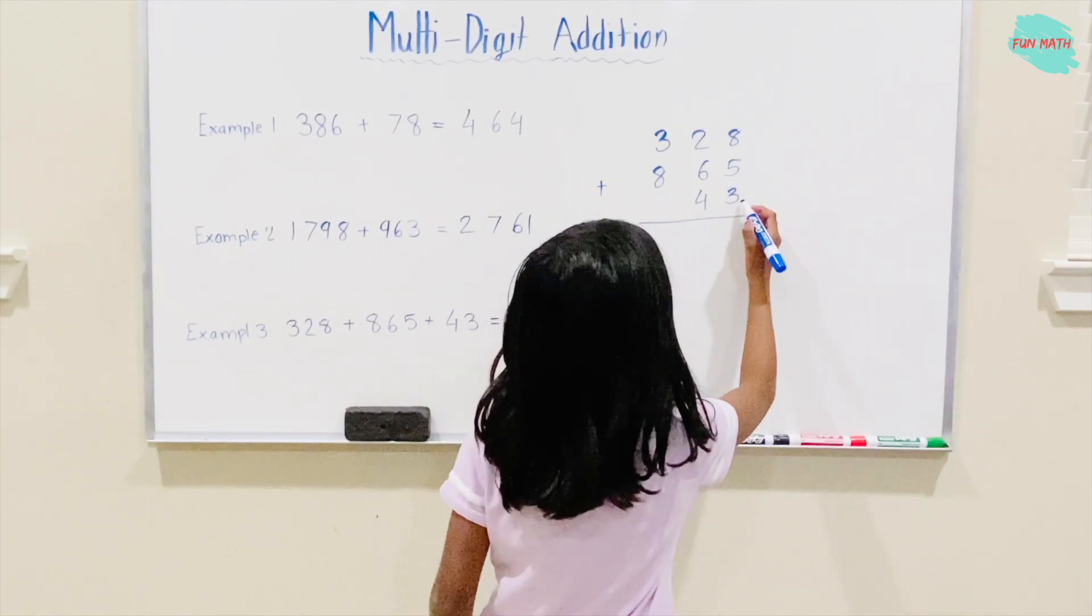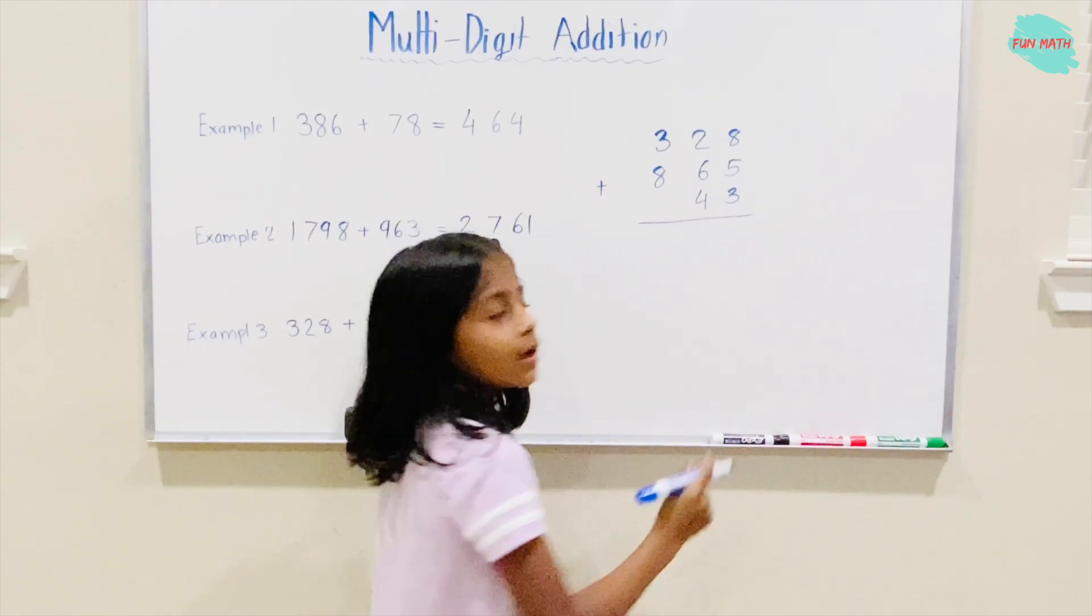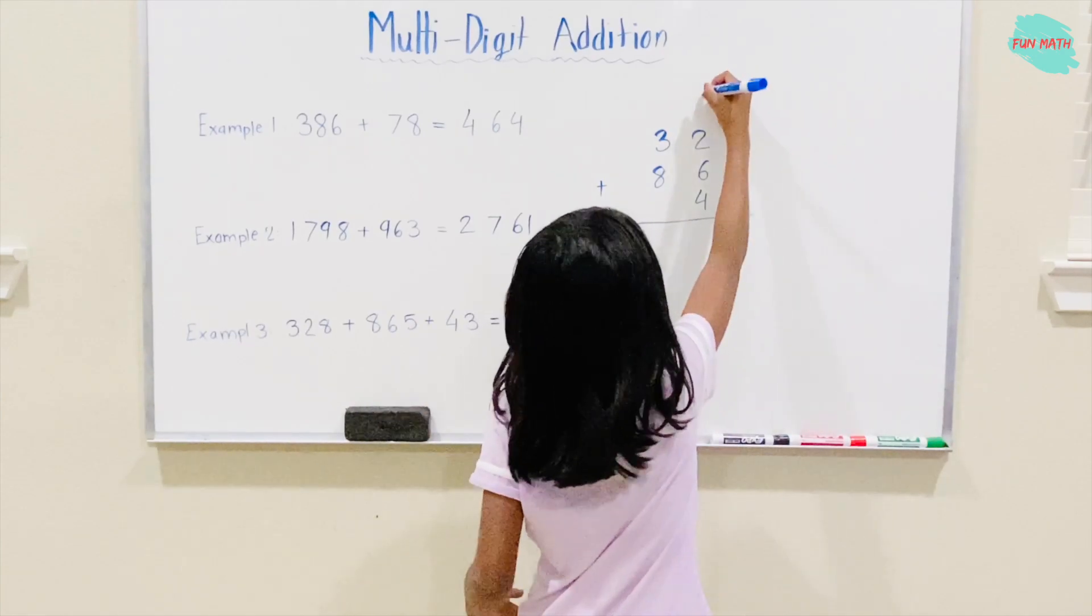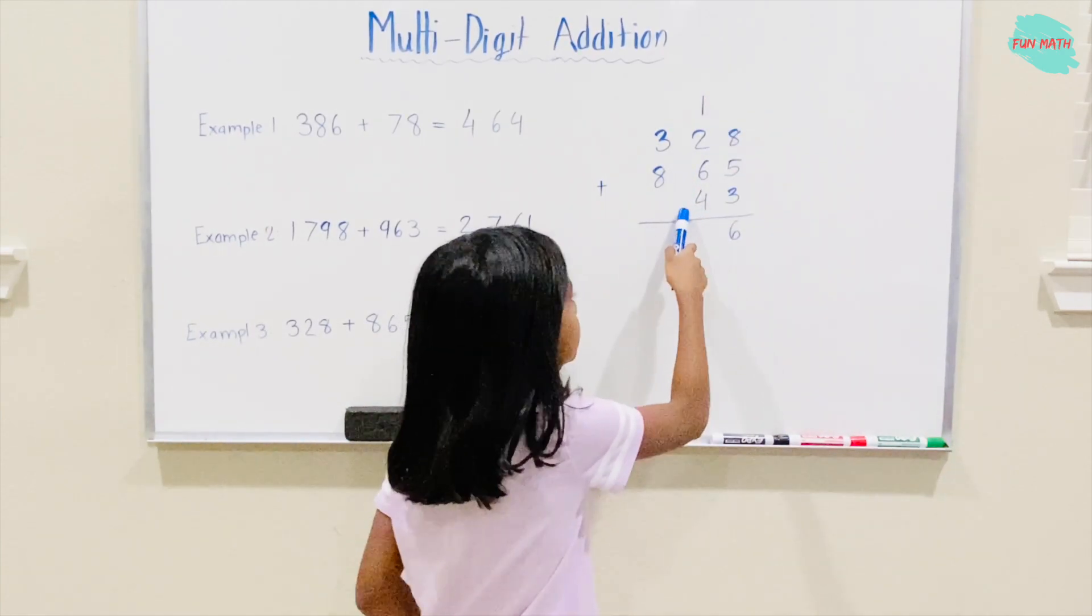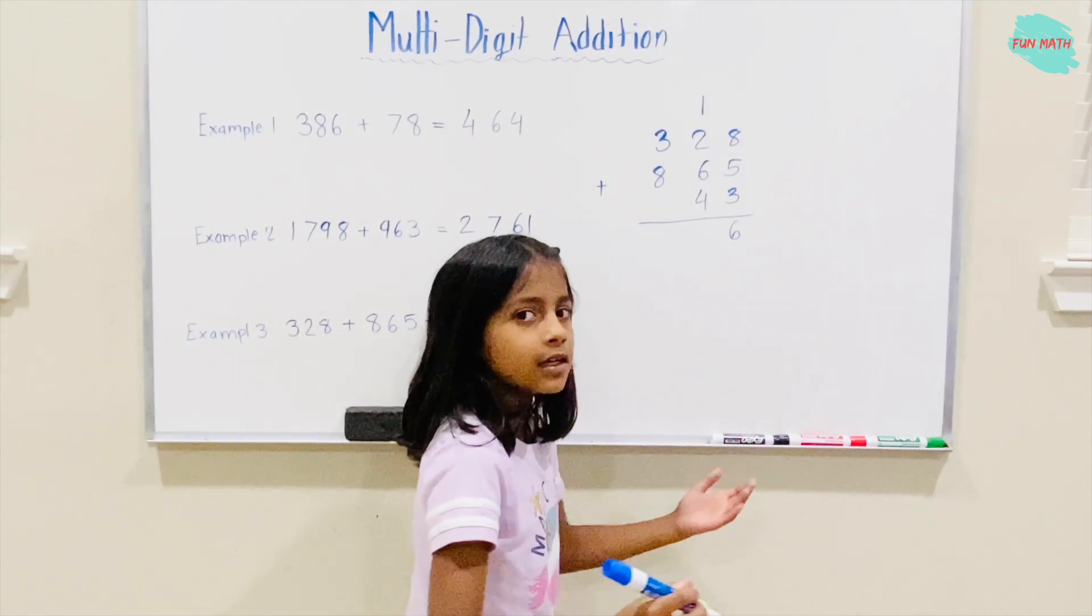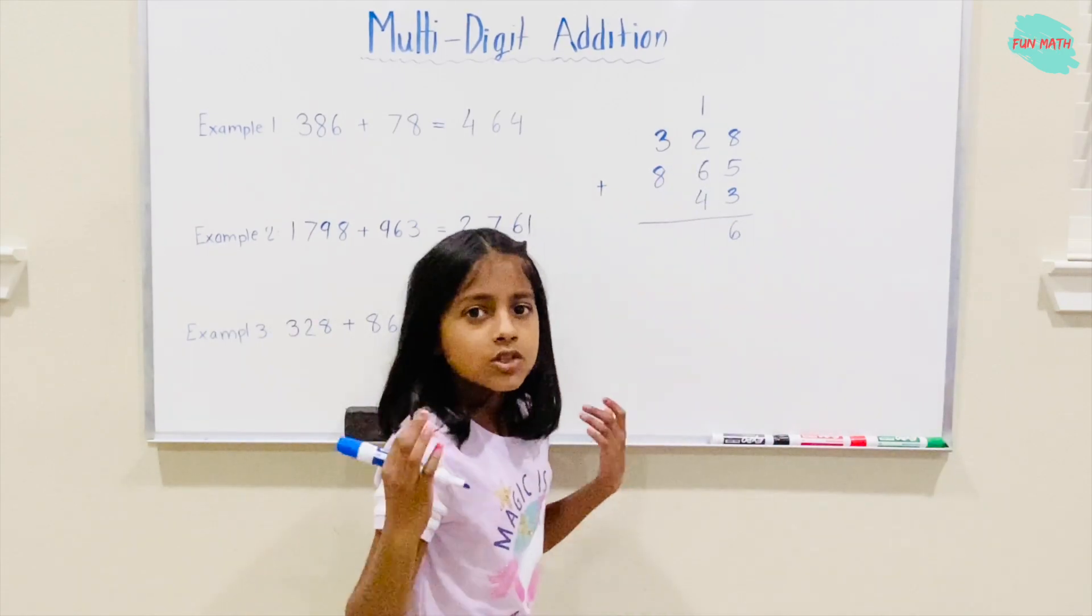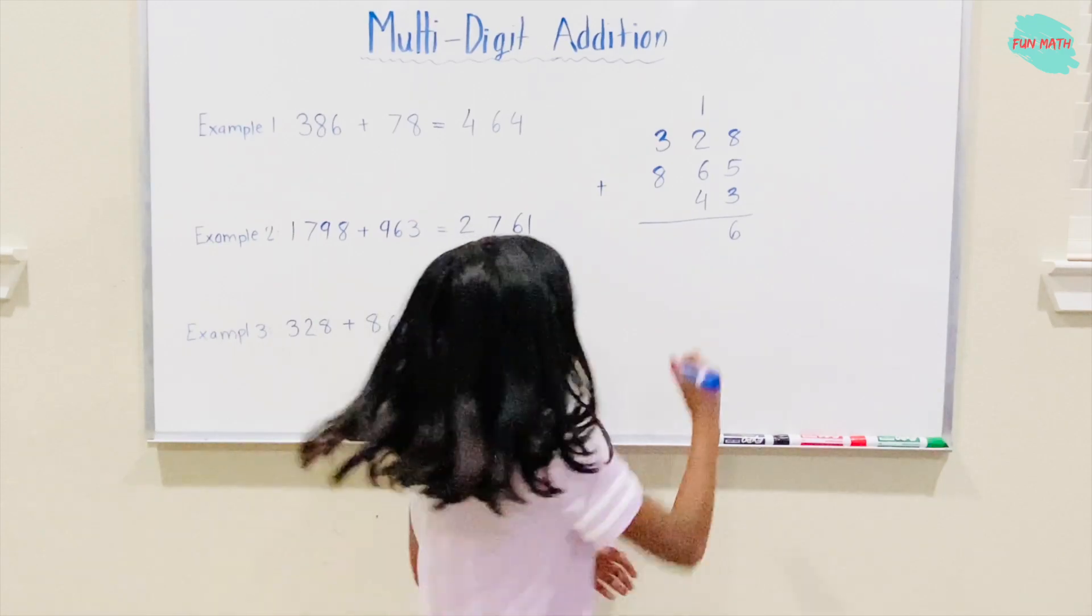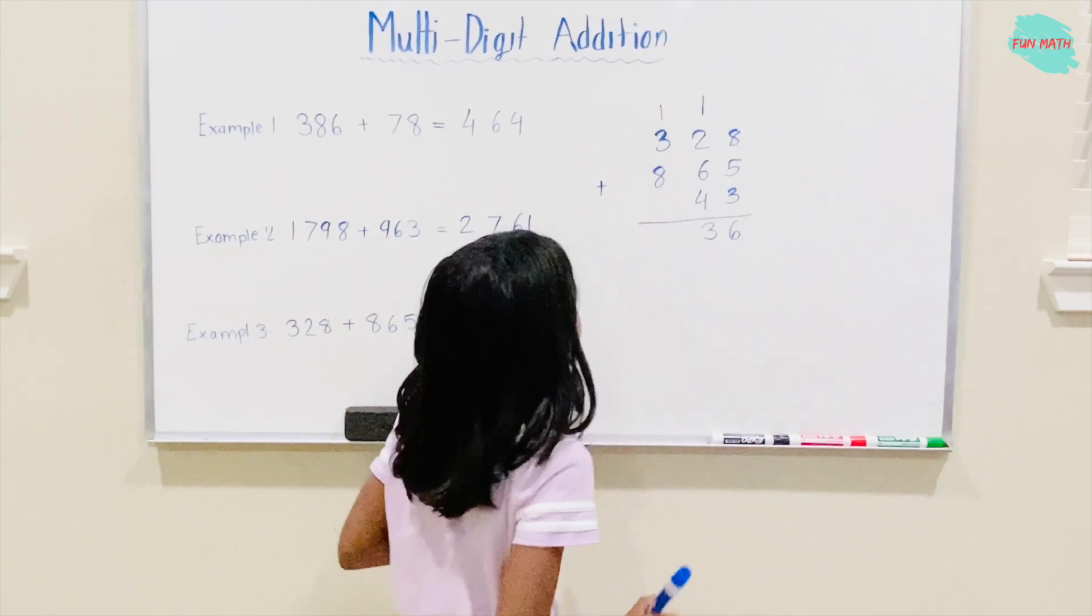8 plus 5 plus 3 is 16. 6 will go here. One will carry on top. 2 plus 6 plus 4 is 12, plus 1. 12 plus 1 is 13. 3 will go here. One will carry on top.